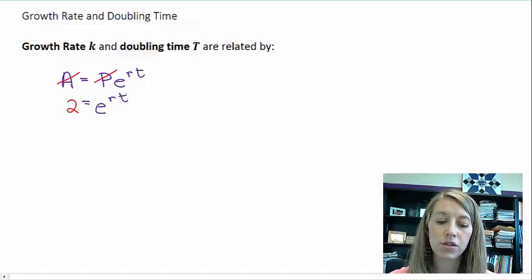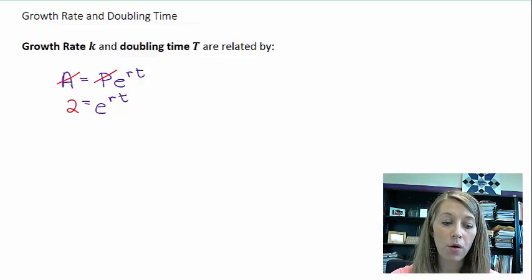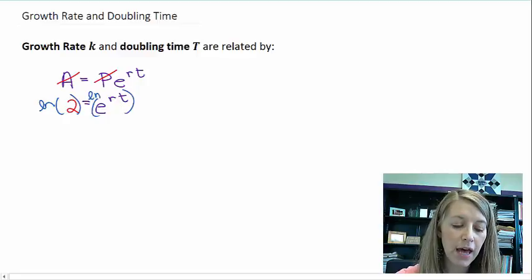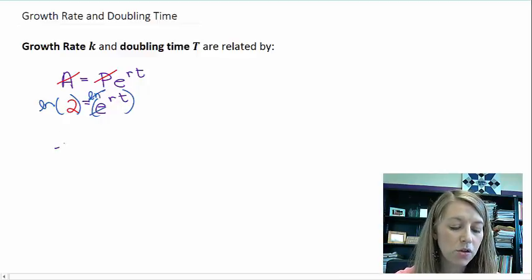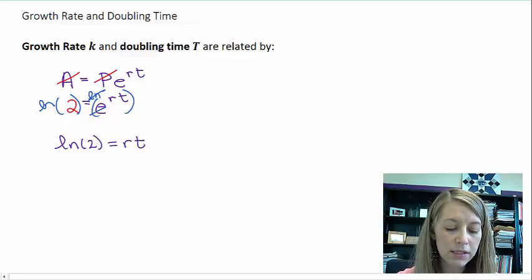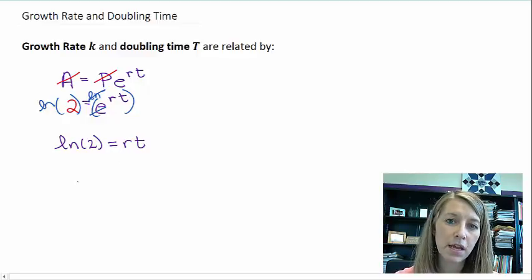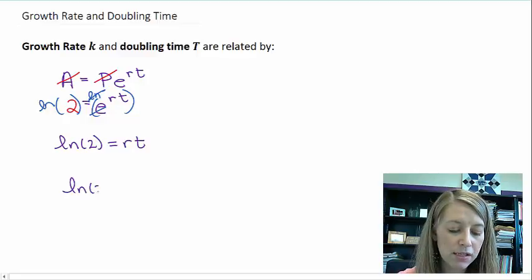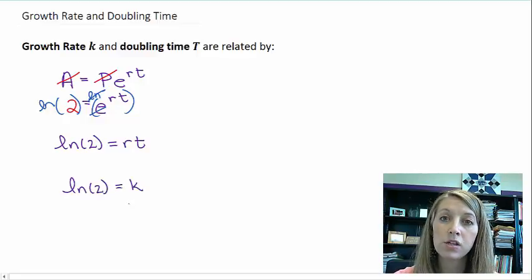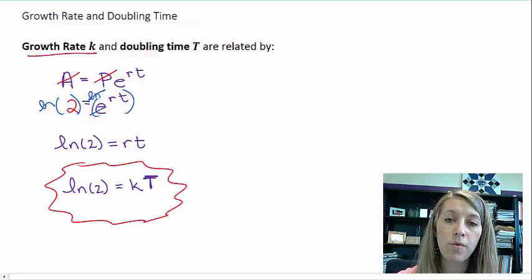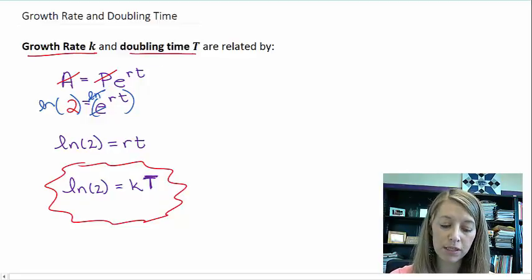So this is 2 equals e^(rt). If I want to solve this for either r or t, we can solve this equation by taking natural log of both sides, because natural log is going to cancel out this e on our right-hand side. That gives us ln(2) equals rt. This is one of our doubling formulas. Sometimes we see the variable as r, and sometimes as k. So I can write this as ln(2) equals kT. So that's the rate k, and capital T represents doubling time. This is a formula that can relate our growth rate k and our doubling time T.